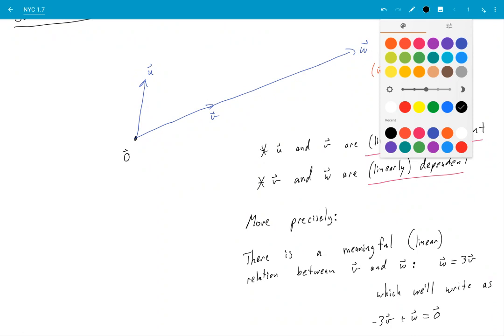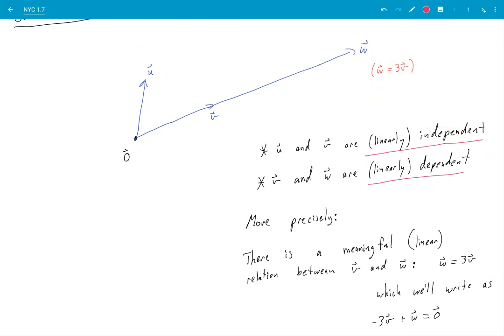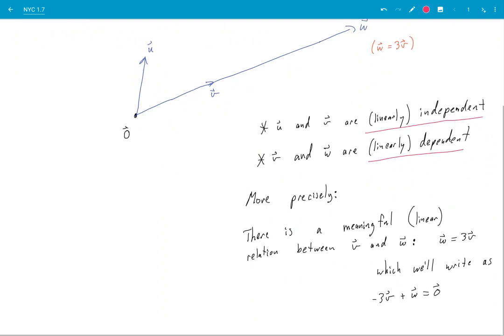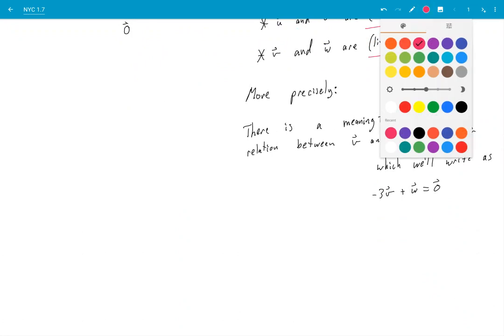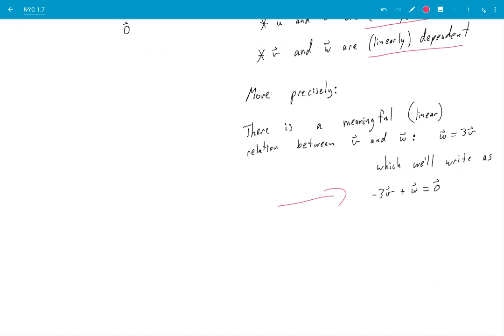Okay, we'll say that a set of vectors are dependent if there exists an equation like this that relates them. So this is called a dependence relation.